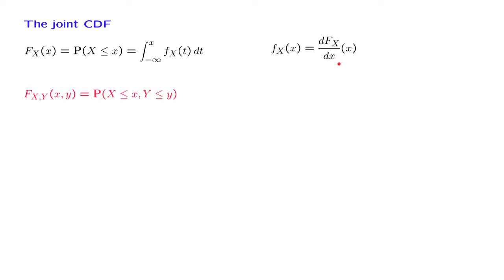We can define the joint CDF as the probability that x and y, the pair xy, takes values that are below certain numbers, little x and little y.